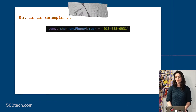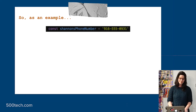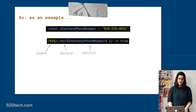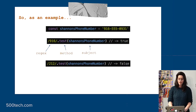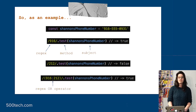As an example, if I stored my phone number as a string — it's not my phone number — I could run the test method on it with the regex pattern 916 and it would return true. But if I ran a different pattern, it would return false. Or I could use an OR operator and it would still return true. That's the regex OR operator down at the bottom.